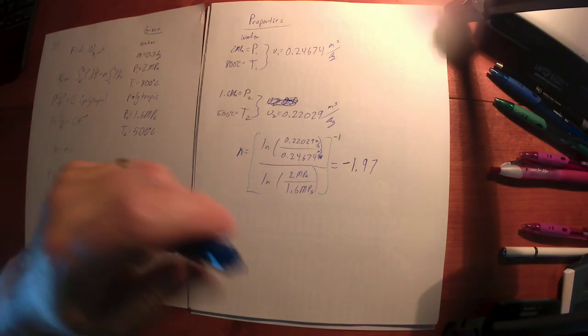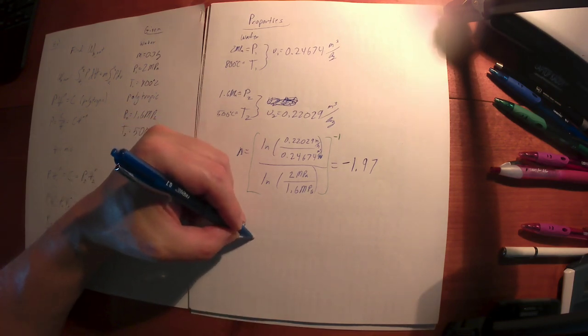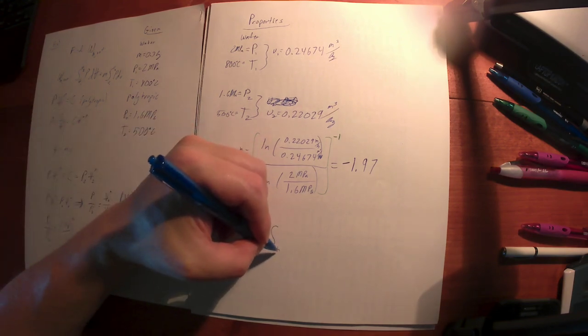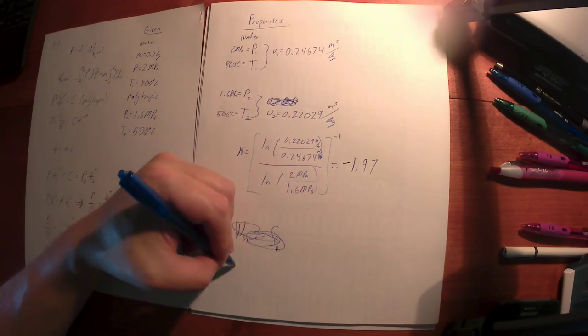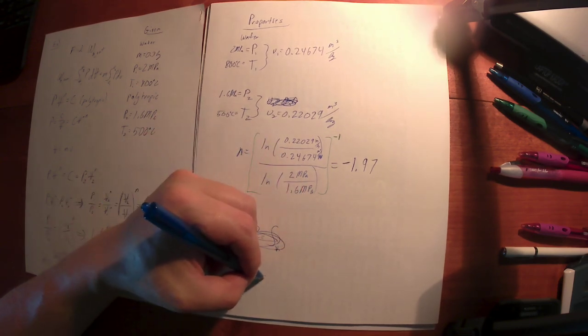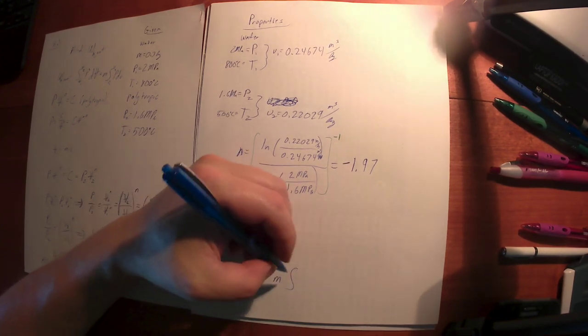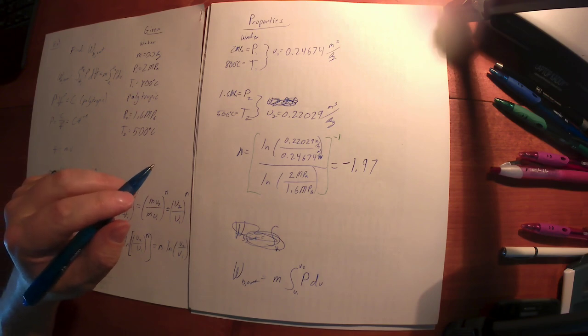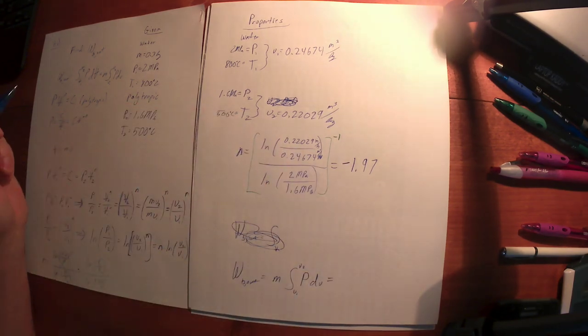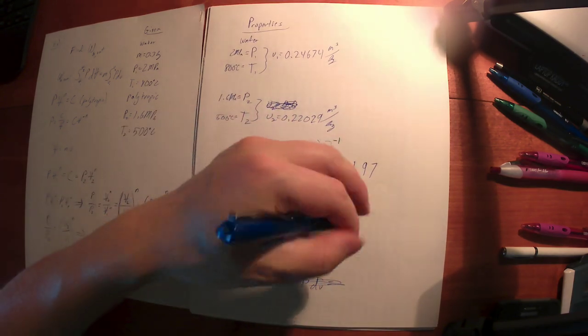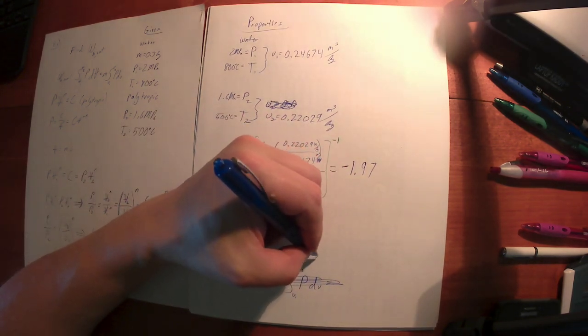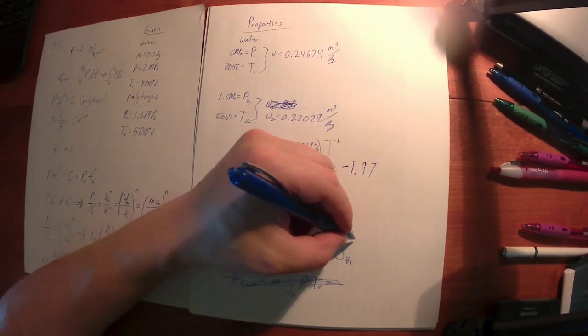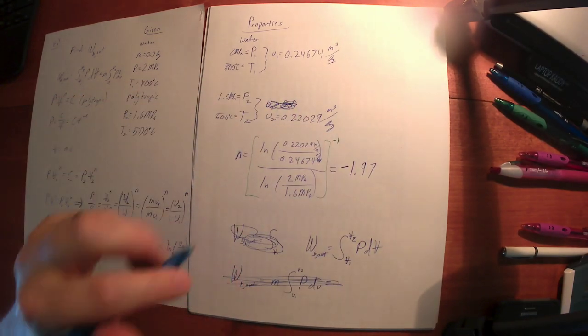So what I've got to do now is I've got to integrate. Again, we're looking for the boundary work. The boundary work is going to be the integral from, and let's use the mass form. Actually, let's do the other form. Let's use the total volume form. We could make it work either way.